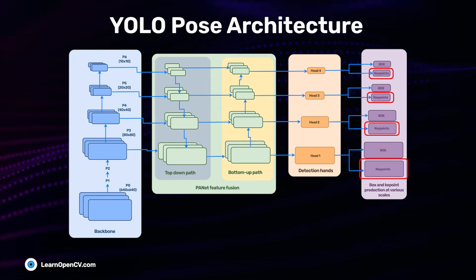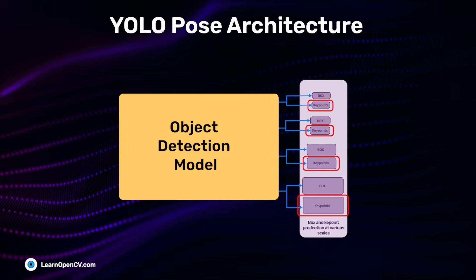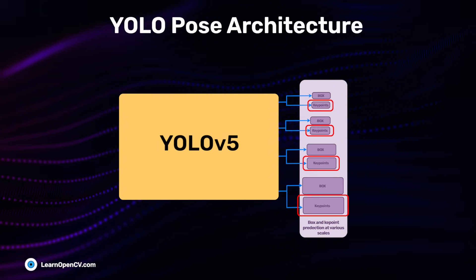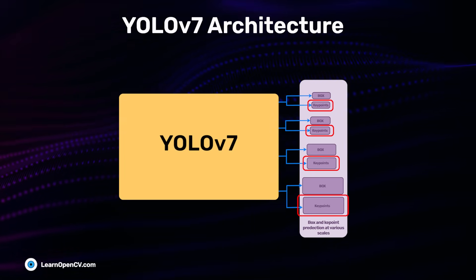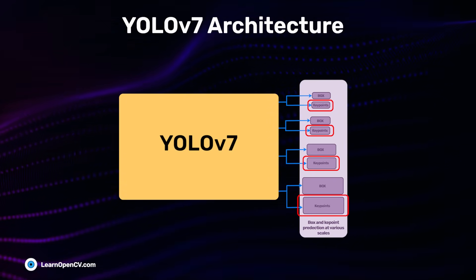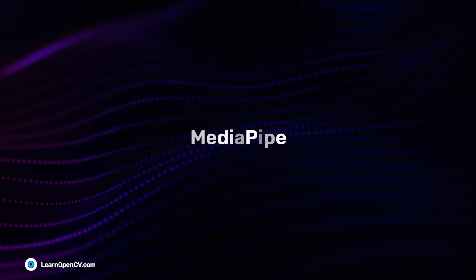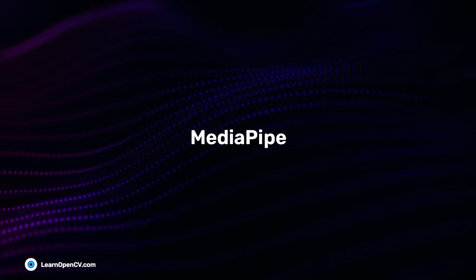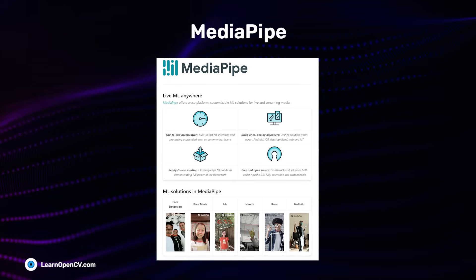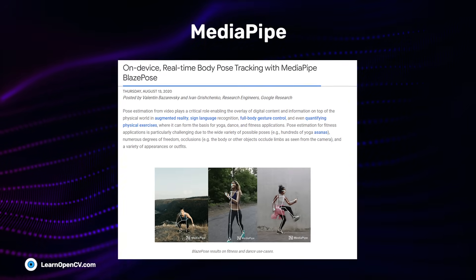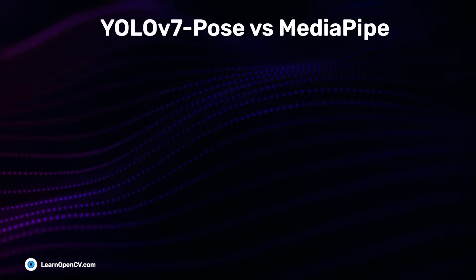YOLO Pose is designed with a general architecture so you can plug in any object detection model. The original paper was based on YOLO V5. Since the architecture is general, the YOLO V7 authors adapted it to YOLO V7, giving us YOLO V7 Pose. MediaPipe is a framework providing multiple computer vision solutions, and one of them is Pose Estimation using the popular BlazePose model.